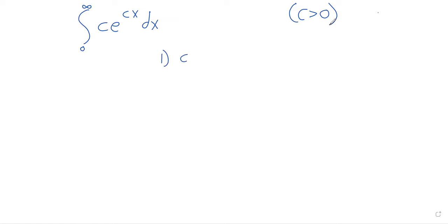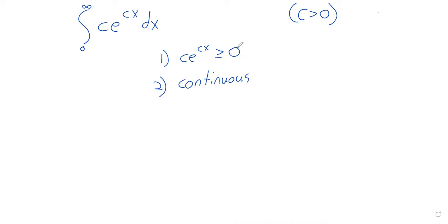It's always positive because e to the x, the exponential, is always positive — so a positive constant times something that's always positive gives a positive function. It's continuous; you can actually be discontinuous at finitely many points, but we'll just think of them as being continuous, and this certainly is.